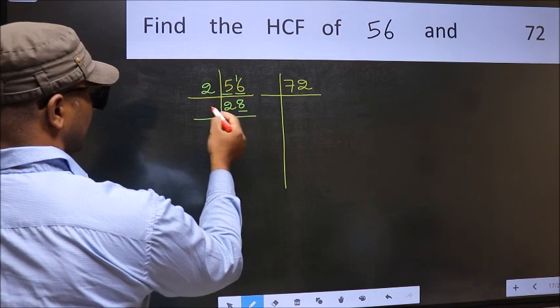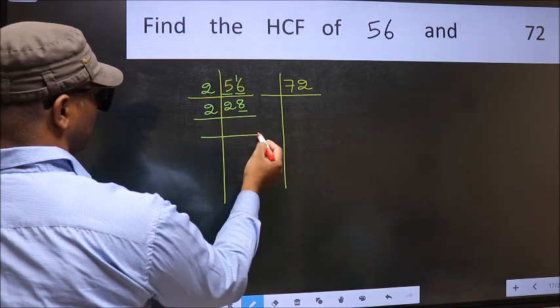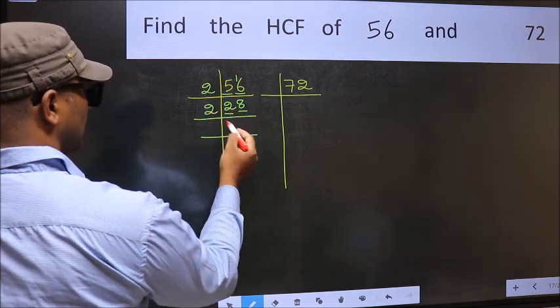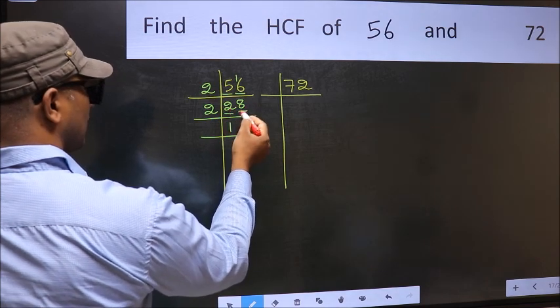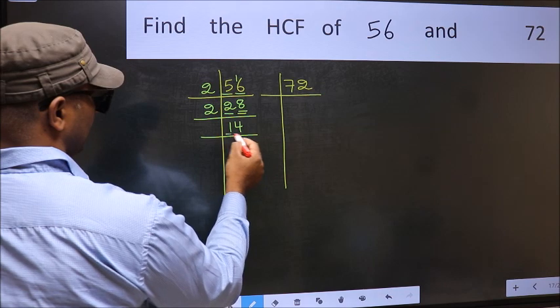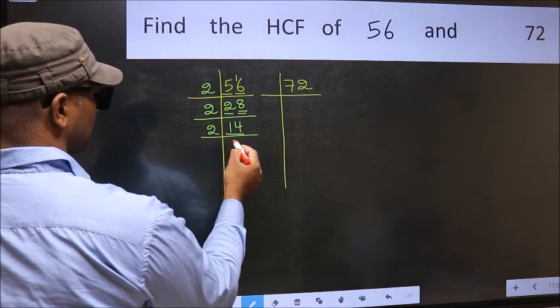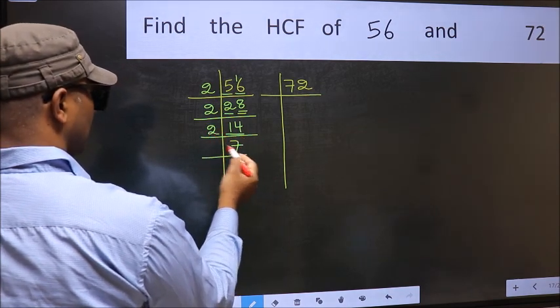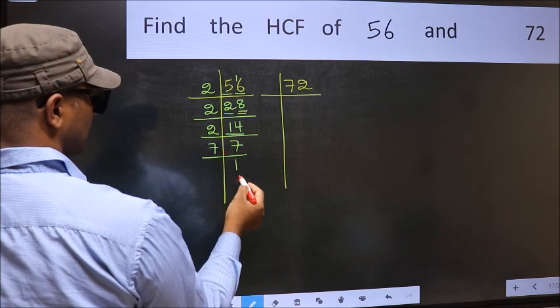Now last digit 8 is even, so take 2. First number 2. When do we get 2 in the 2 table? 2×1=2. The other number 8. When do we get 8 in the 2 table? 2×4=8. Now 14 is 2×7=14. 7 is a prime number, so 7×1=7.